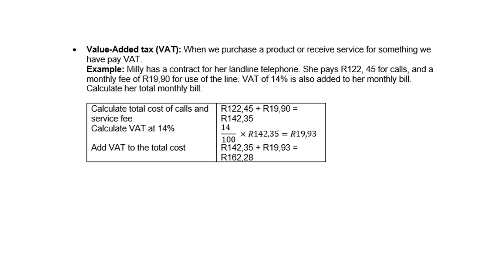Total calculated cost of calls and service fee: 122 rand 45 cents plus 19.90 rand gives you 142 rand 35 cents. Then you must find what is 14% of that. So it is 14 over 100 times 142.35, which is 19 rand 93 cents, which you now must add. You get therefore a final total cost of 162 rand and 28 cents.